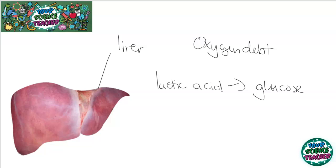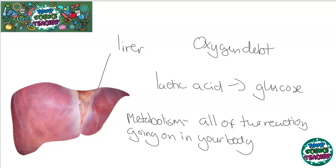If you sum up all the reactions going on in the body, that describes the metabolism. The metabolism is simply all of the reactions going on in your body. As we have seen in the respiration topic, we have looked at aerobic respiration, anaerobic respiration, and the repaying of oxygen debt by converting lactic acid back to glucose. The metabolism is a lot more complex than you may have once thought — there are lots of reactions going on in your body.